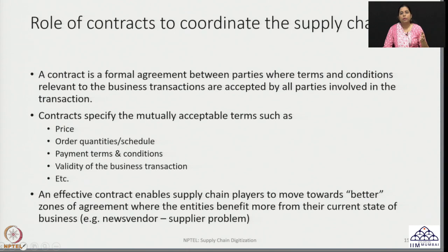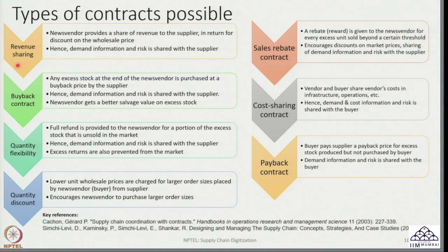An effective contract enables supply chain players to move towards a better-off position for all entities within the supply chain, such that they benefit more than if this contract was not present. In our case, a variety of contracts can be discussed and implemented. Some are revenue sharing contracts, in which the revenue earned by the news vendor is shared with the supplier in exchange for a discount on the wholesale price. A buyback contract incentivizes the news vendor to order more, with the promise that if there is excess stock the supplier will purchase it back. In both cases, the news vendor ends up sharing information about the market and risk with the supplier.